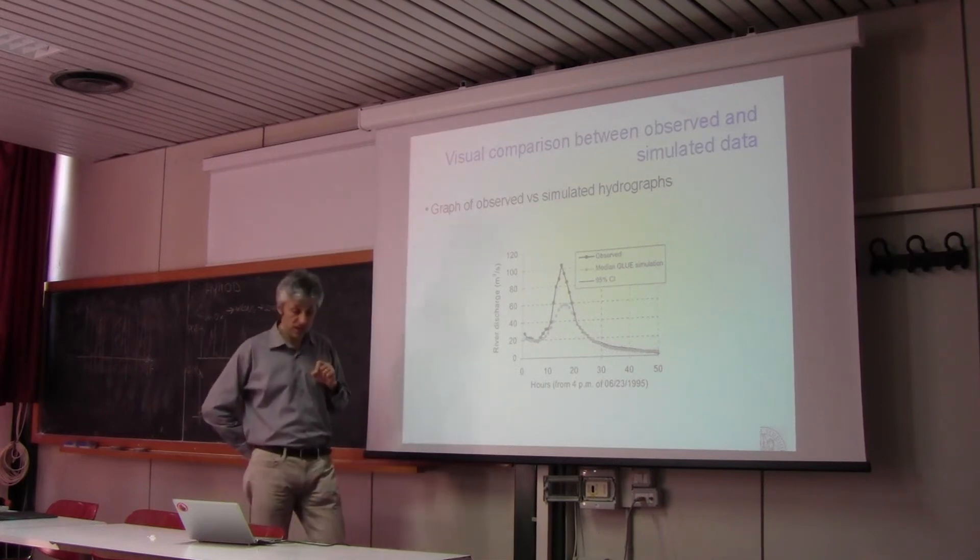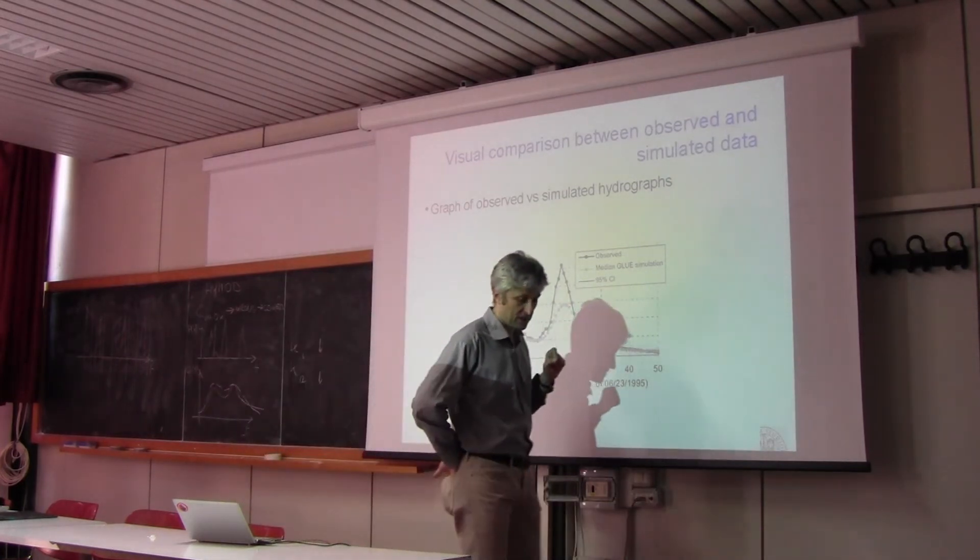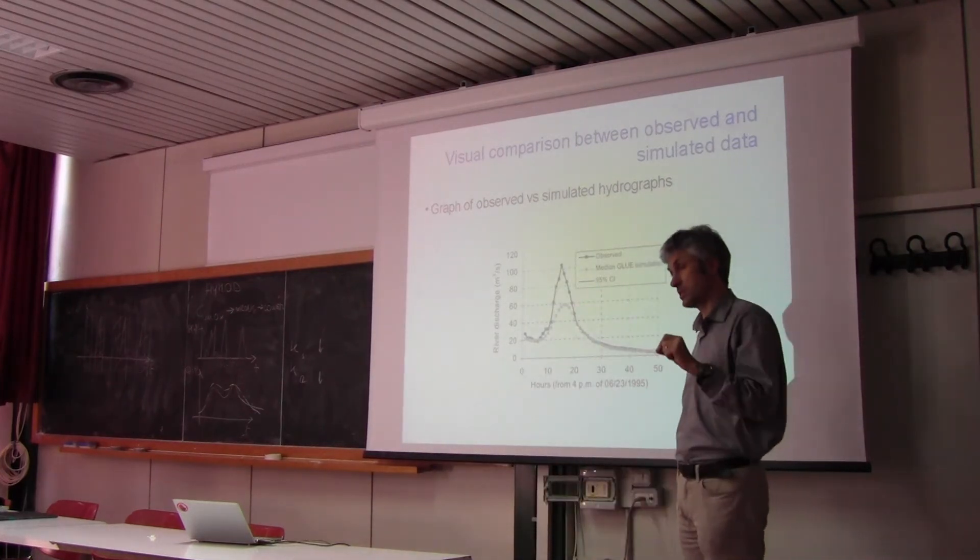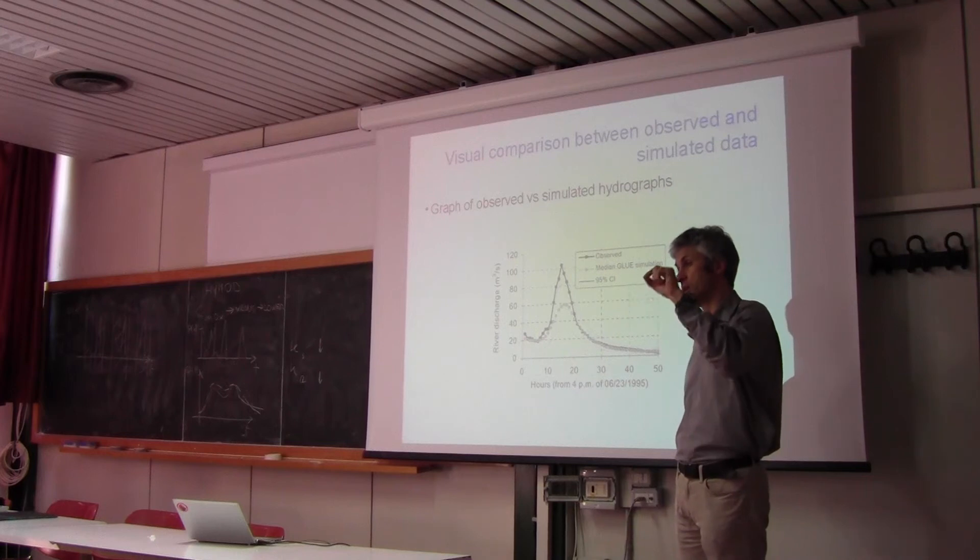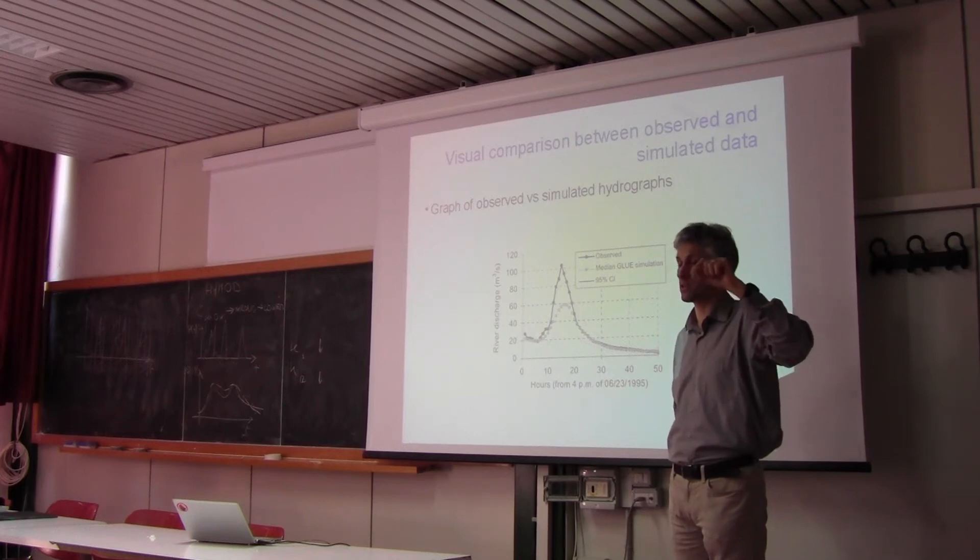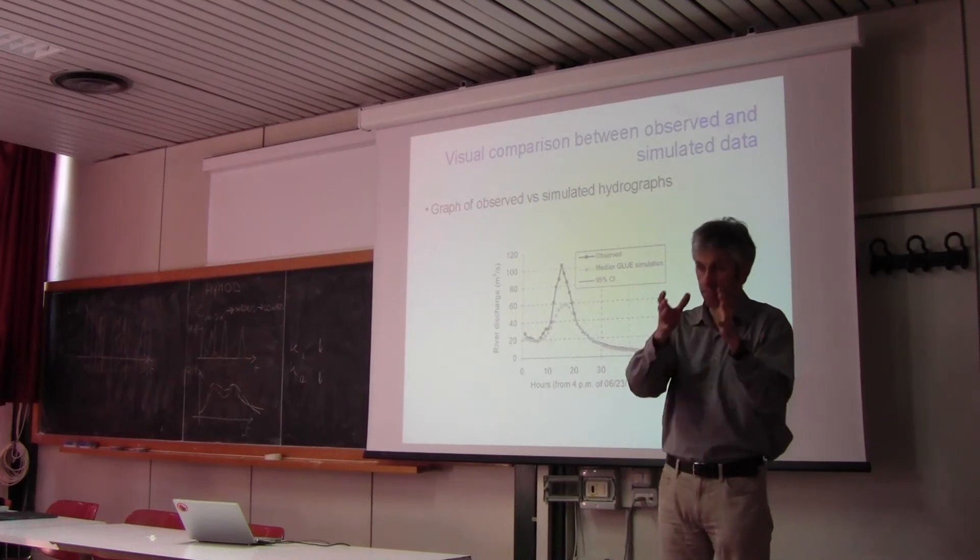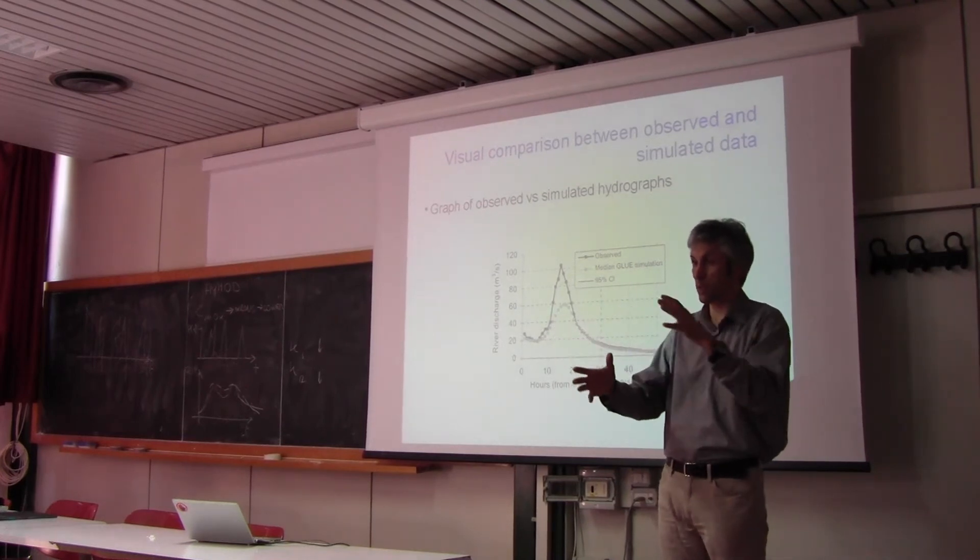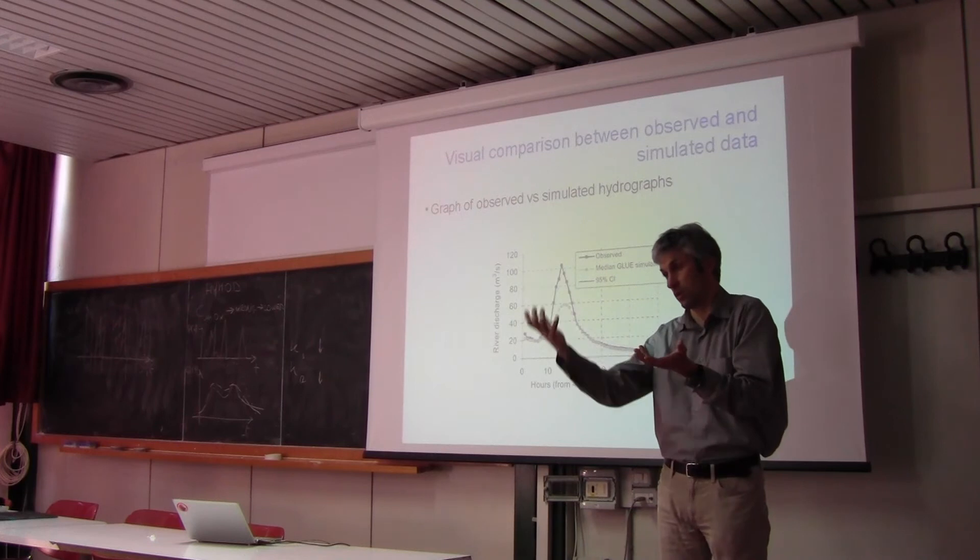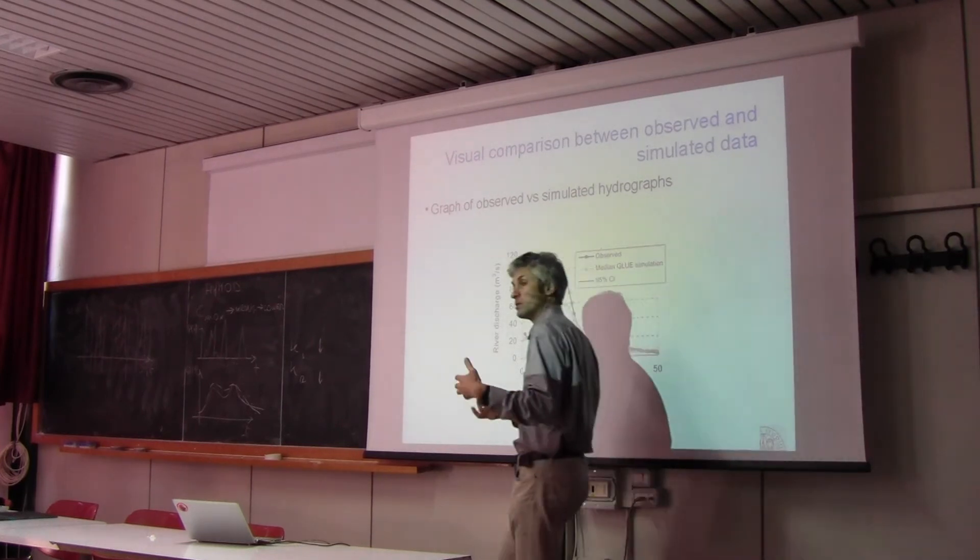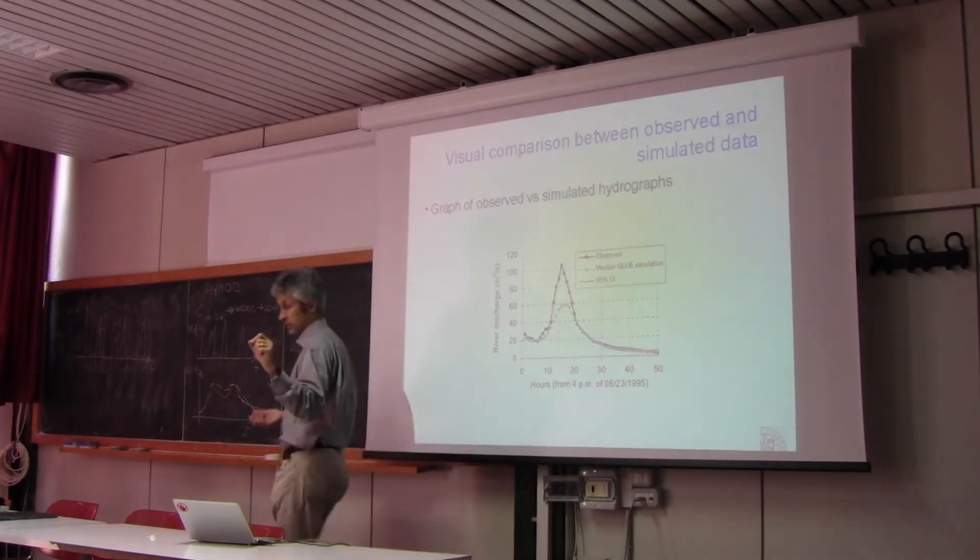So in scientific papers it is quite common to read, for instance, that the Nash efficiency of the model in calibration was 0.89. In validation it decreased to 0.75. So people give an indication of the Nash efficiency in calibration and validation and one would expect that in validation is lower because of course in validation the model is not trained to that particular flood.